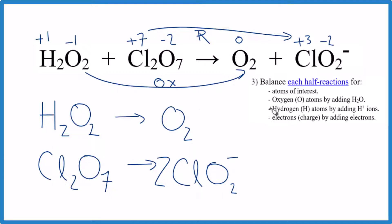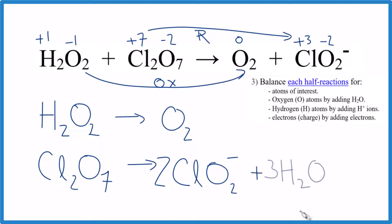Next we balance oxygens by adding water molecules, since this takes place in water. For the first half reaction, we have two oxygens on each side — that's balanced. For the reduction half reaction, we have seven oxygens on one side and four on the other (two times two), so I add three water molecules. Now three plus four equals seven — oxygen atoms are balanced.